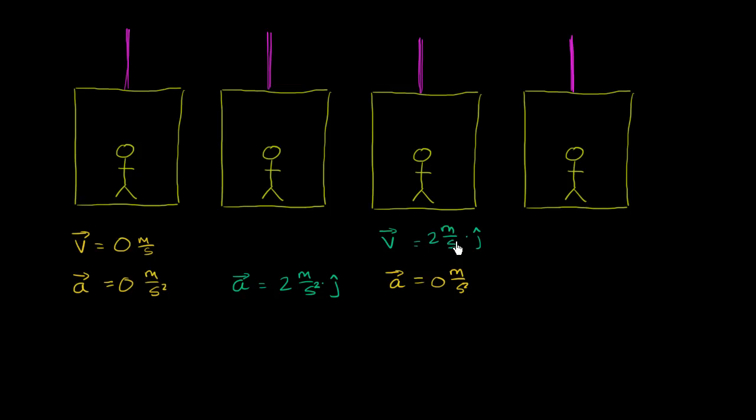Let's say we travel at that constant velocity for 10 seconds, covering about 20 meters. As we get close to our floor, the elevator needs to decelerate. So the acceleration here is negative 2 meters per second squared in the j direction — the elevator is actually accelerating downwards now in order to slow down and return to stationary.